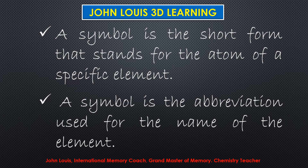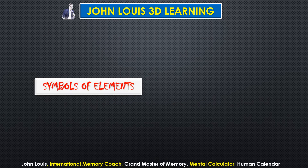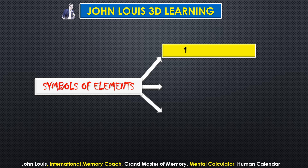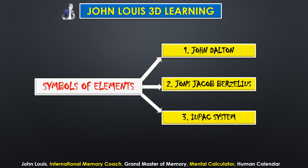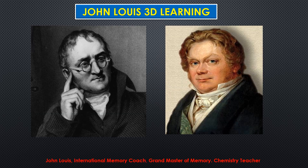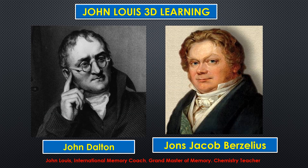Symbols of elements were developed in three stages. First, John Dalton developed a system in the form of pictorial diagrams for all elements, but it was obscure and difficult to learn and remember. Therefore, Jöns Jacob Berzelius developed a new system, which we learnt in the last video. Today we are going to see the final system — the IUPAC system.